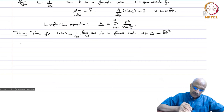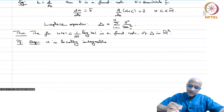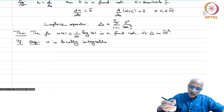We will prove this in several steps. First, u is locally integrable — away from the origin, log|x| is a nice continuous function so there are no problems. We only need to look at the integrability over a compact set in a neighbourhood of the origin.